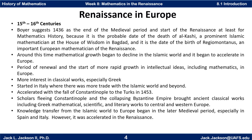Boyer, in his book, suggests 1436 is the end of the medieval period and the start of the Renaissance period, at least for mathematics history, because it's the probable date of the death of al-Kashi, a prominent Islamic mathematician at the House of Wisdom in Baghdad. It's also the date of the birth of Regiomontanus, an important European mathematician of the Renaissance. During this time, we see a shift from the Islamic world being the center of mathematical growth to Europe taking over that role.